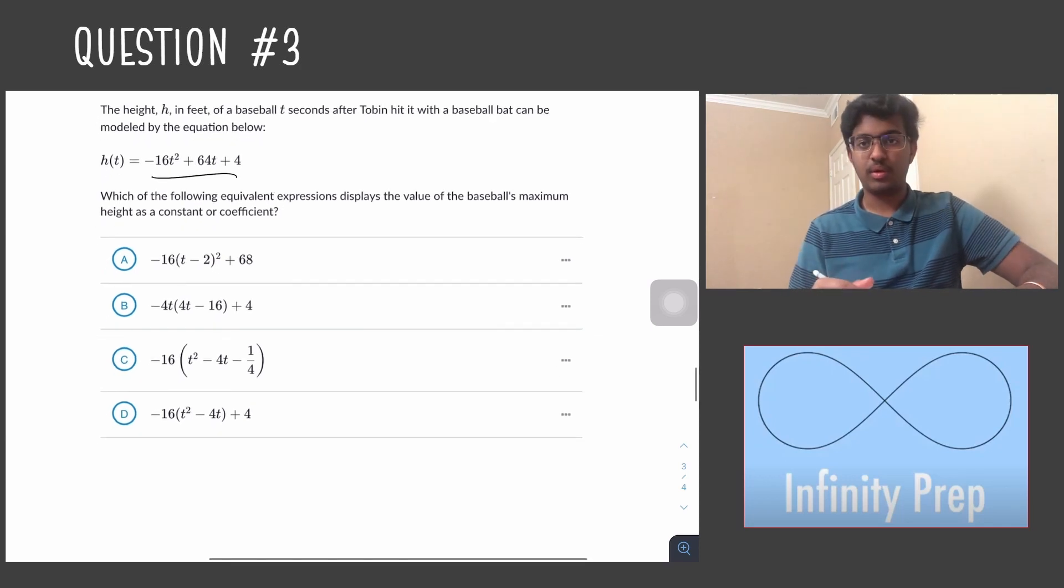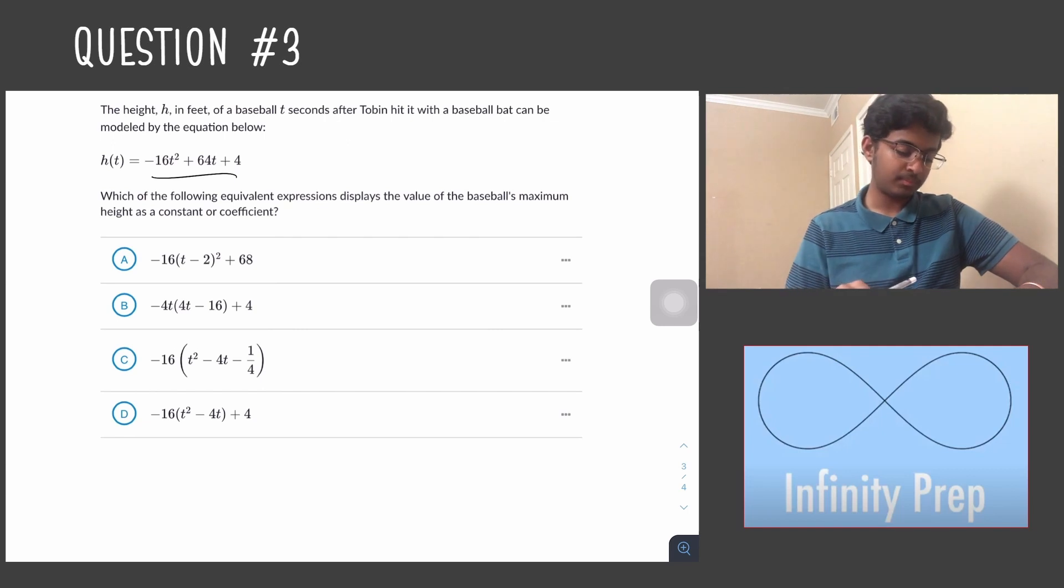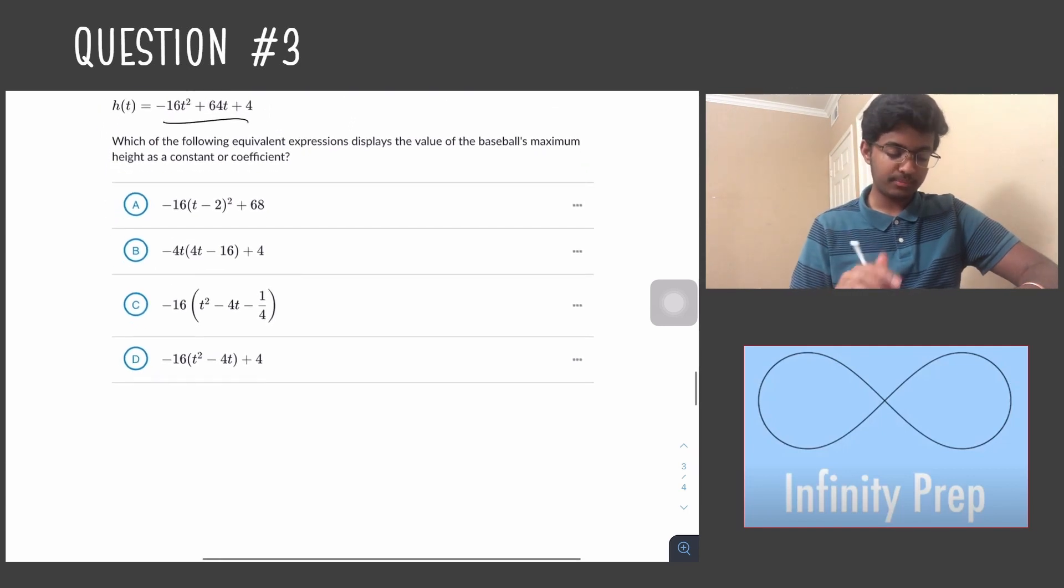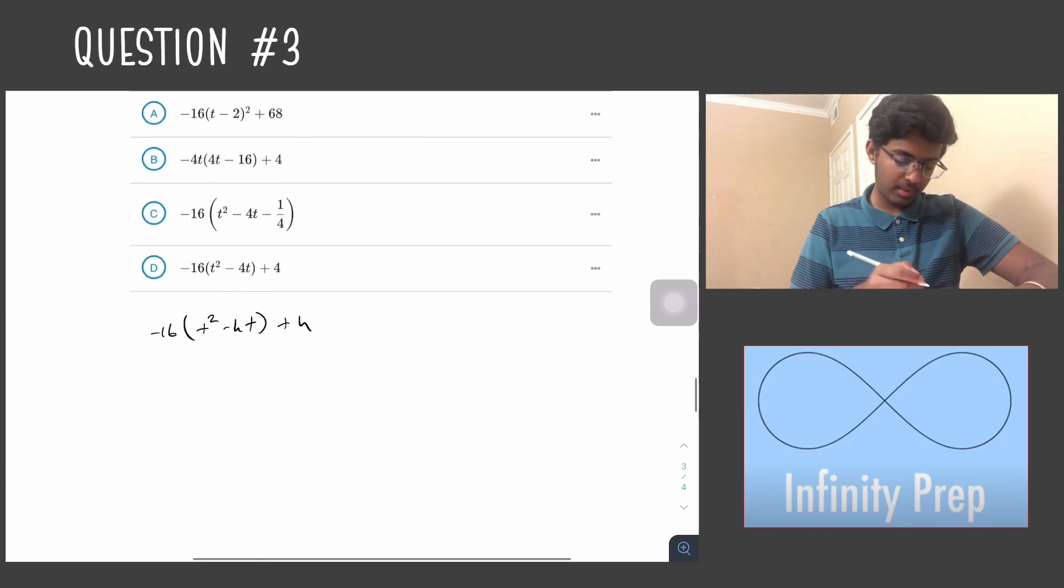We need to turn this equation into its vertex form, and to do this we need to use the completing the square technique. So our first step in using it would be to factor out the -16 from -16t² and 64t. So we get -16(t² - 4t) + 4.